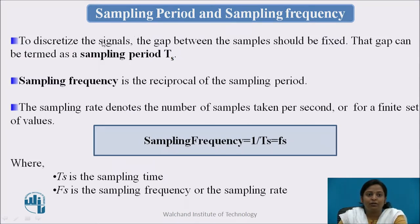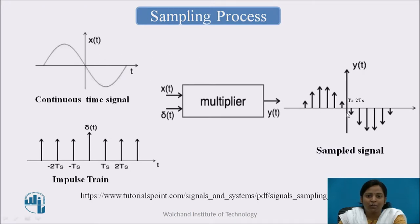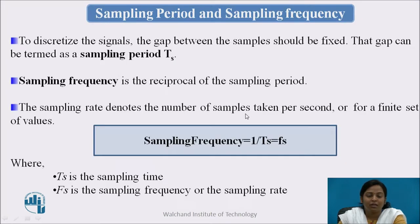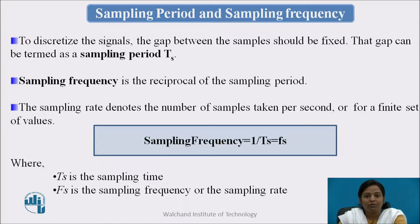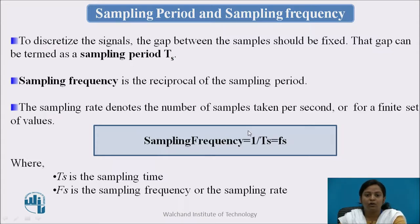The sampling period is the fixed gap between samples used to discretize the signal, denoted as ts. Sampling frequency is the reciprocal of sampling period, fs = 1/ts. The sampling rate also denotes the number of samples taken per second.